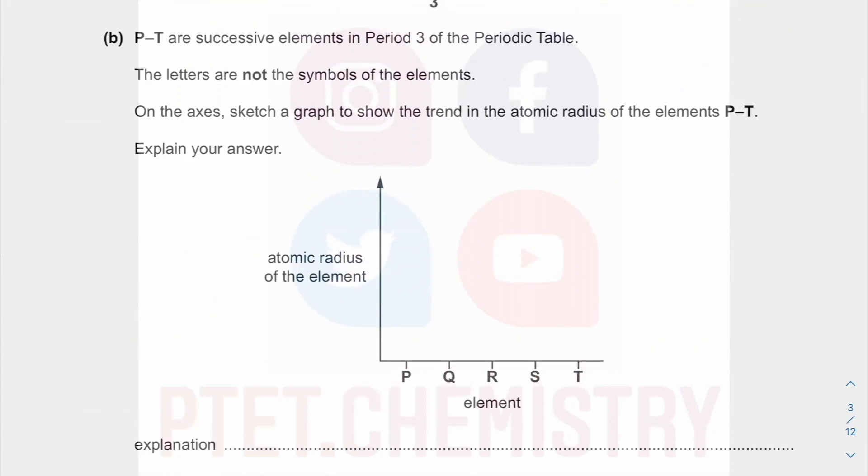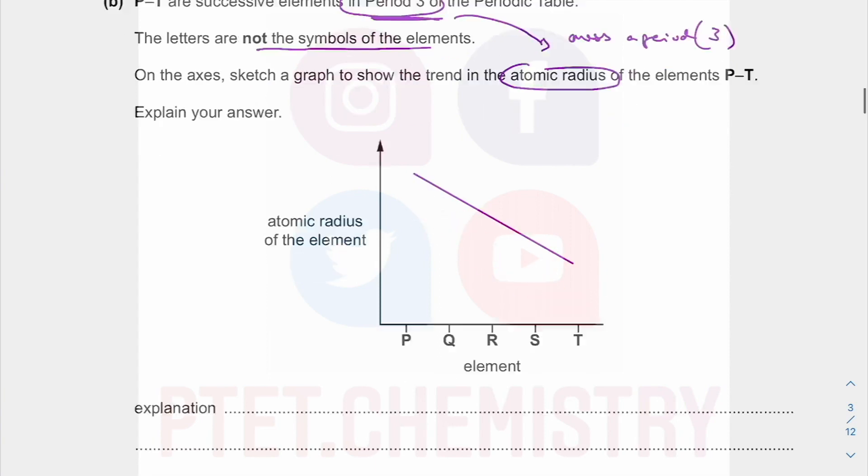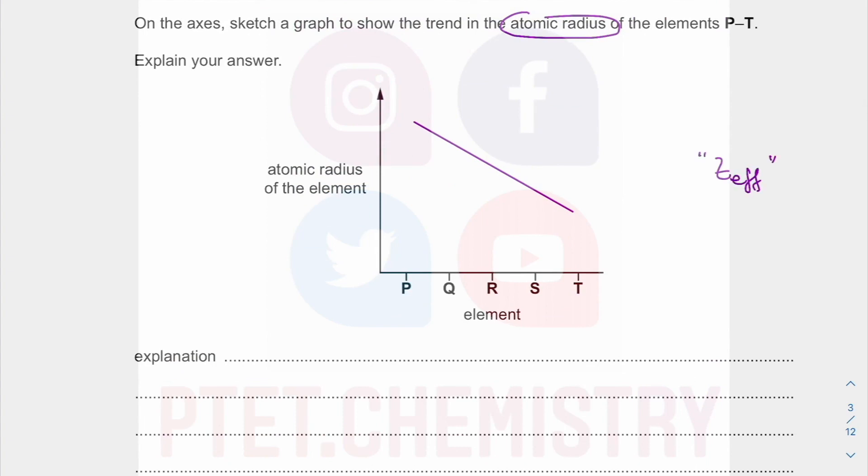So P and T are successive elements in period 3. So now we're talking about the same period. They are not the symbols of the element. So sketch the trend in the atomic radius. This is a period 3. So we know the radius will get smaller. It doesn't matter really, straight line, curve, I don't know. The radius gets smaller. It all comes down to the idea of effective nuclear charge,